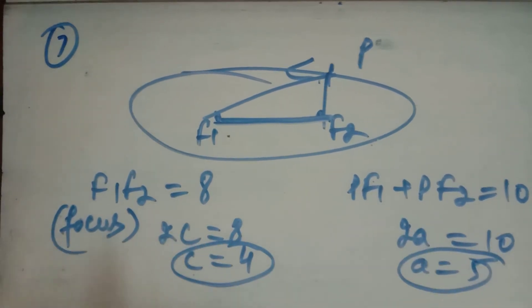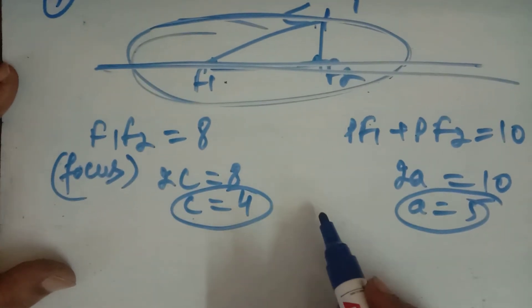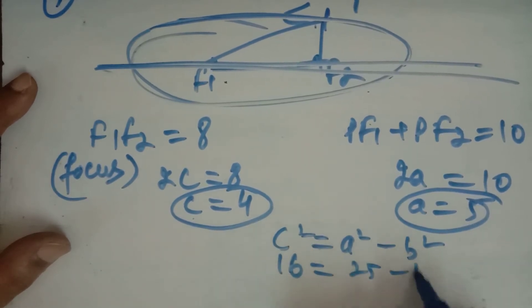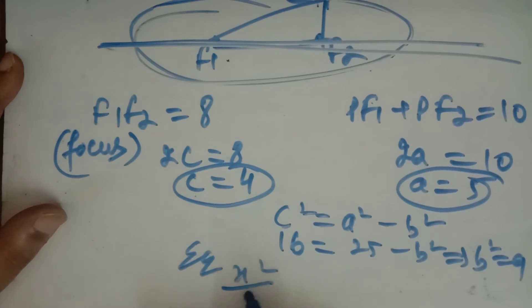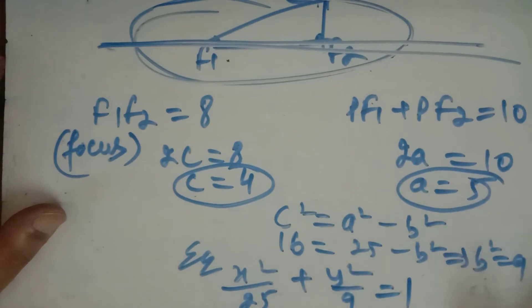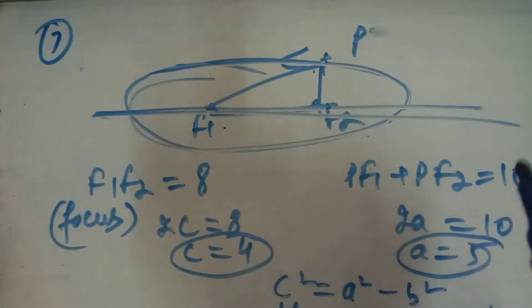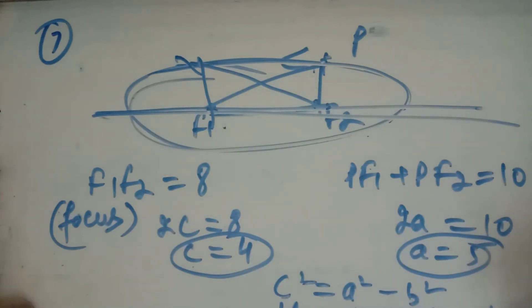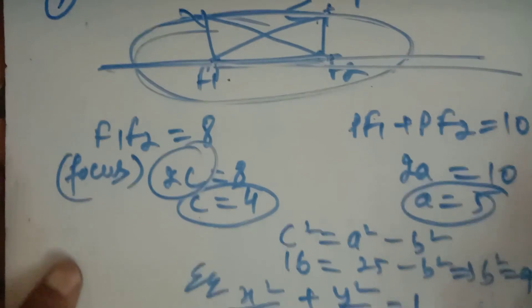The sum of distances from two fixed points is always 2A — according to the definition of the ellipse. So 2A = 10, A = 5 and C = 4. Find the equation of the path traced by the man. B² = A² − C² = 25 − 16 = 9. So the equation is X²/25 + Y²/9 = 1. This is the ellipse equation — B निकाल लो ellipse के formula से।